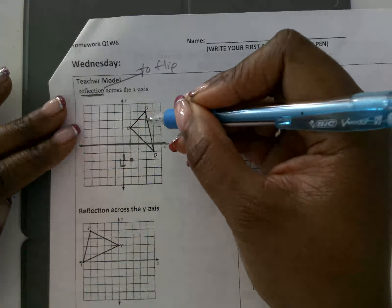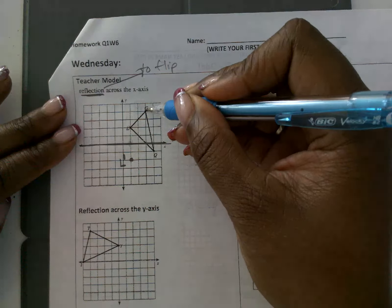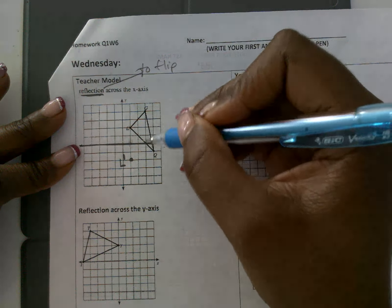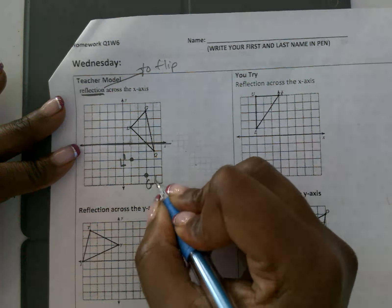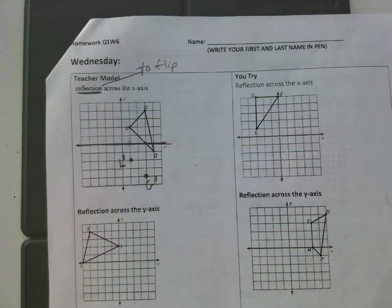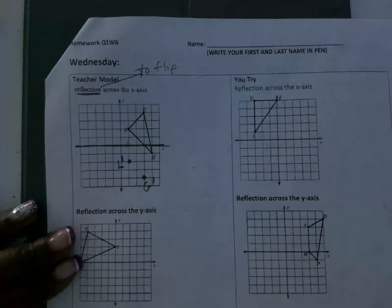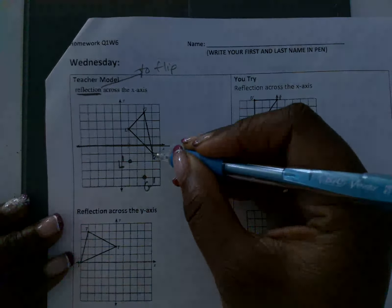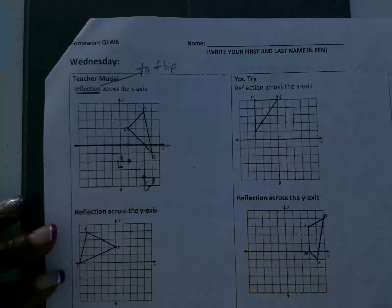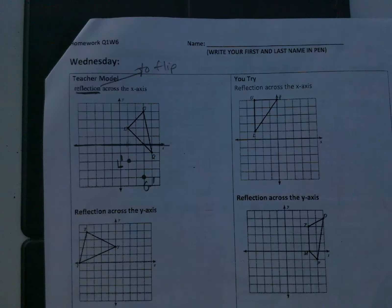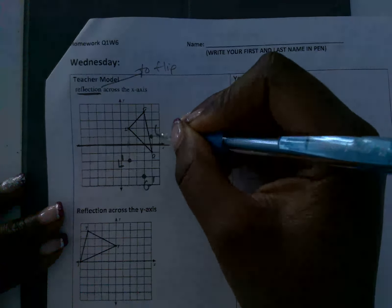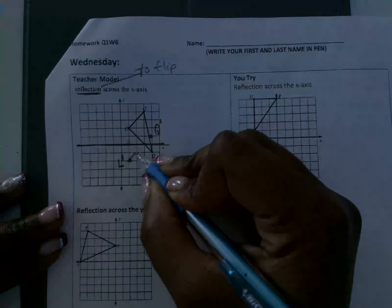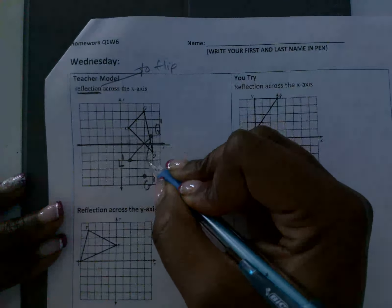G is 1, 2, 3, 4 above the line. So when you flip G over the line of reflection, it's going to be 1, 2, 3, 4 below. So this is also G prime. Now Q is 1 below the line. So when I flip it, it's going to be 1 above the line. So this is now Q prime. I'm going to connect my points, and you can see that it is flipped.